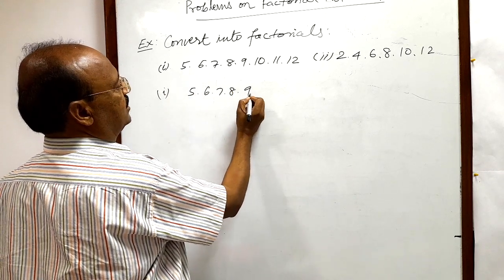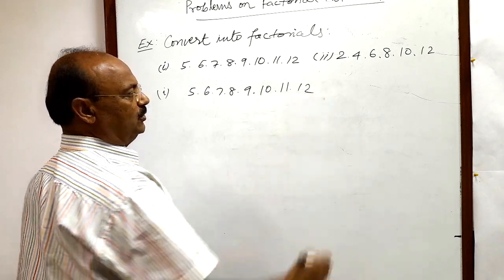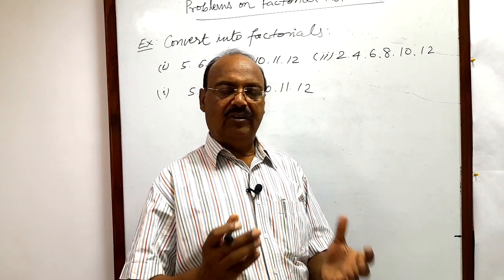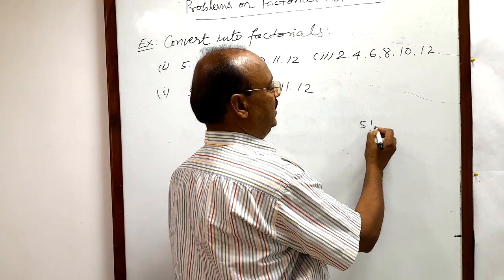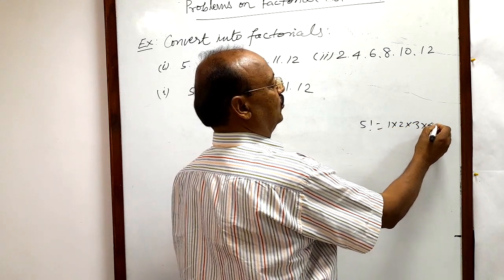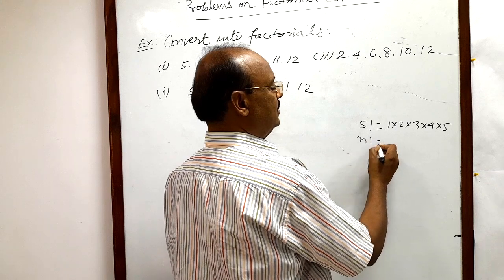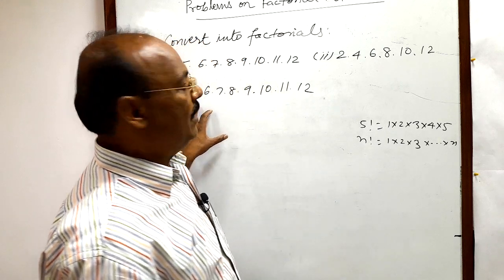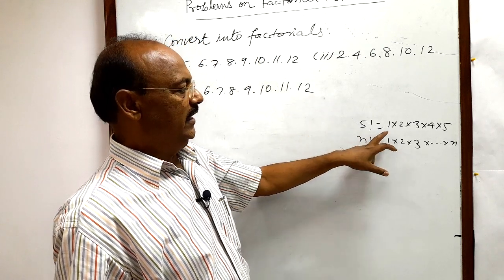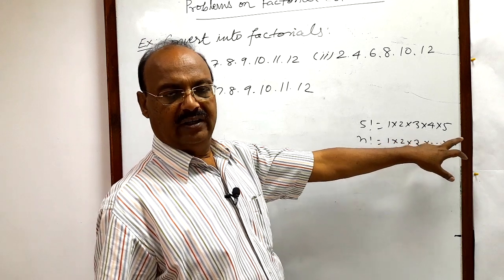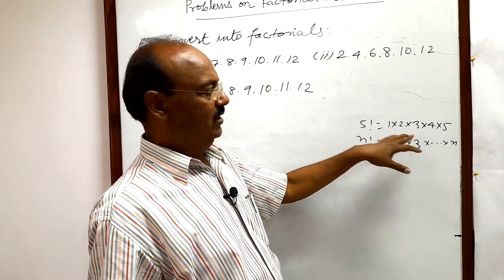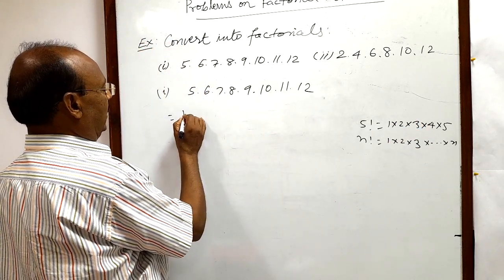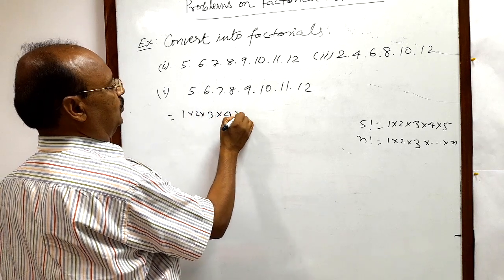The first question is 5 × 6 × 7 × 8 × 9 × 10 × 11 × 12. At the beginning of this chapter on factorial notation, we already discussed that 5! means 1 × 2 × 3 × 4 × 5, and n! means 1 × 2 × 3 × ... × n. So whenever we have to convert into factorial notation, multiplication should start from 1 — 1, 2, 3 — all natural numbers starting from 1.